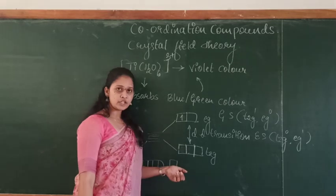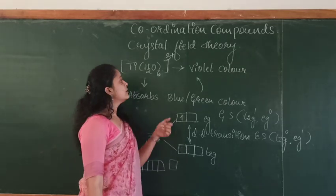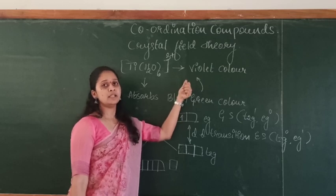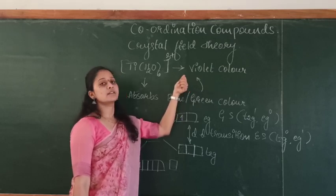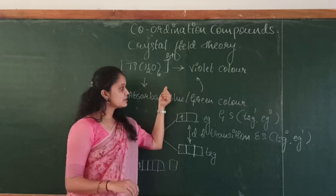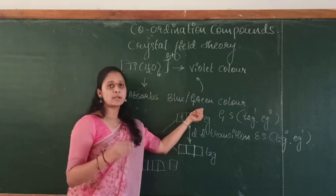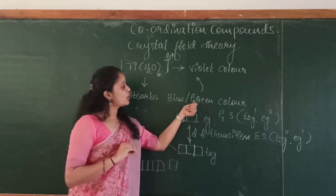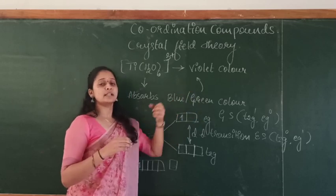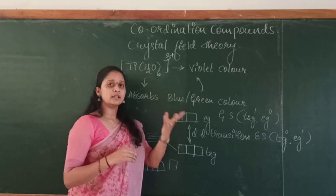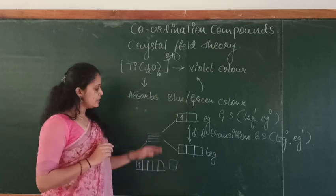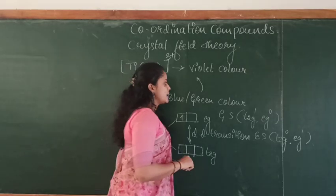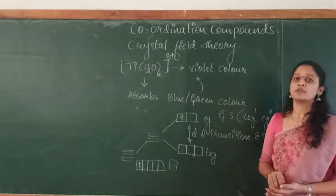Thus the d-d transition takes place and the coloration of the compound can be seen. This complex is violet in color because it absorbs blue or green color, and the complementary color is emitted. This is how crystal field theory explains the coloration of compounds.